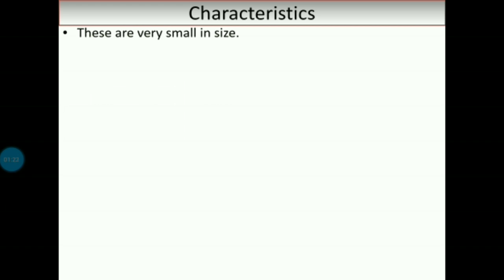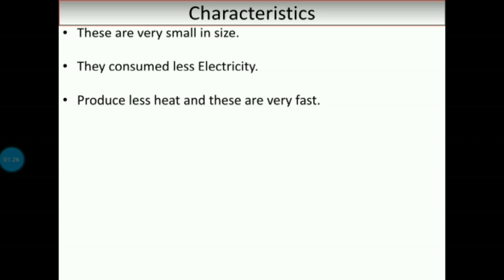In this generation the computer size is very small, they consumed less electricity, they produced less heat, but they are working very fast. But the one and only drawback of this generation is they are not intelligent systems. That means they don't make any own decisions. That is the drawback of these computers.